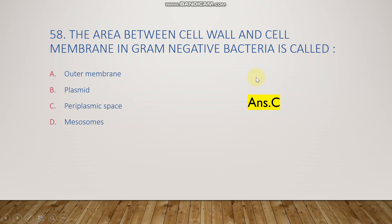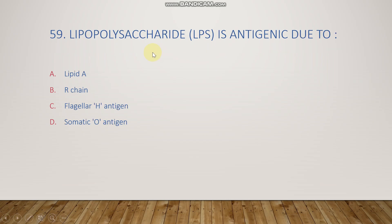The next question: lipopolysaccharide is antigenic due to lipid A, archene, flagellar H antigen, or somatic O antigen? The right answer is option D, somatic O antigen. The LPS on the outer membrane of gram-negative bacteria has three parts: lipid A, a core polysaccharide, and the somatic O antigen.